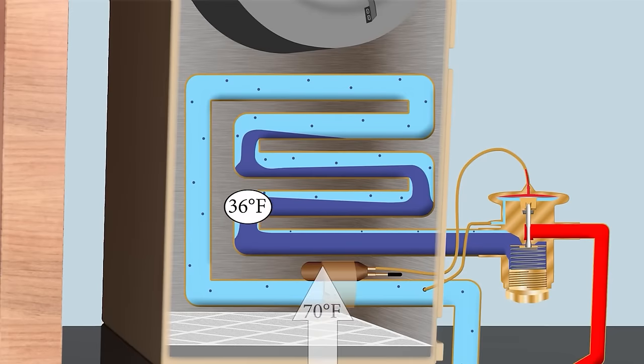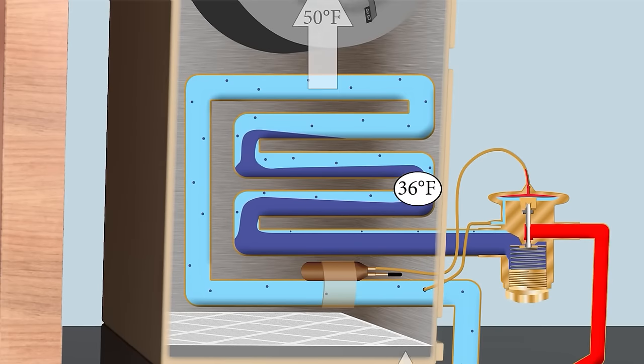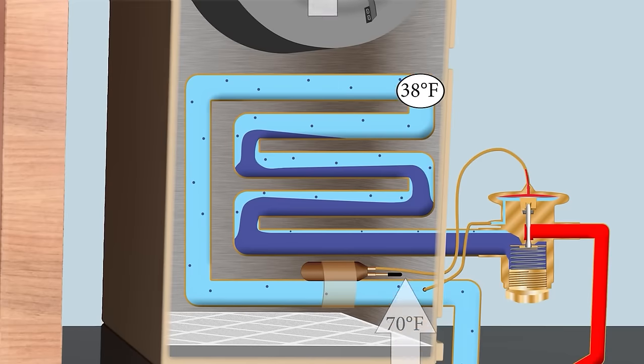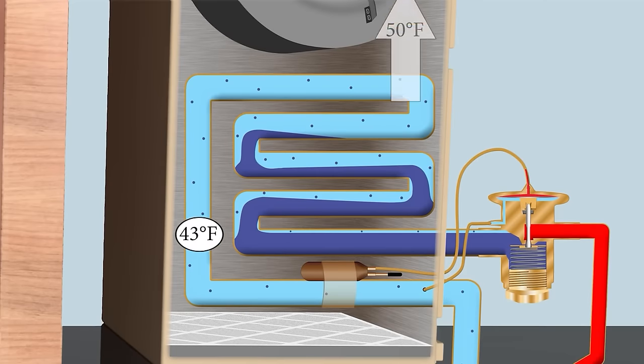If there's not enough air — or no air — traveling across the evaporator coil, the refrigerant is not going to have any heat to absorb. The job of the refrigerant is to absorb heat, which causes it to increase in pressure. If there's no heat, it's going to remain low in pressure — the pressure is going to lower and lower because you have low indoor airflow.